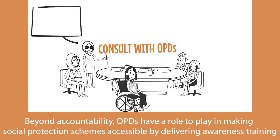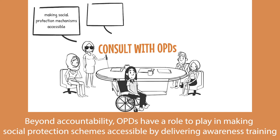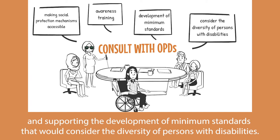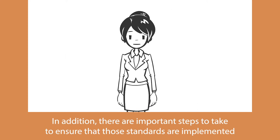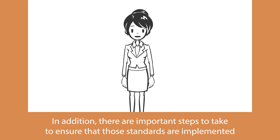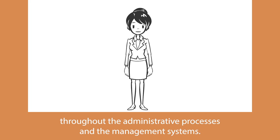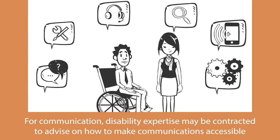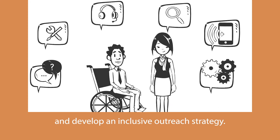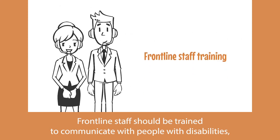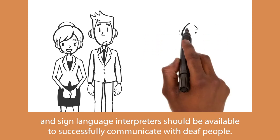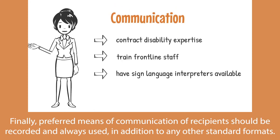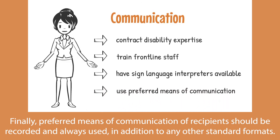Beyond accountability, organizations of persons with disabilities (OPDs) have a role to play in making social protection schemes accessible by delivering awareness training and supporting the development of minimum standards that consider the diversity of persons with disabilities. There are also important steps to ensure those standards are implemented throughout administrative processes. For communication, disability expertise may be contracted to advise on making communications accessible and developing an inclusive outreach strategy. Frontline staff should be trained to communicate with people with disabilities, and sign language interpreters should be available for deaf people. Preferred means of communication of recipients should be recorded and always used, in addition to any other standard formats.